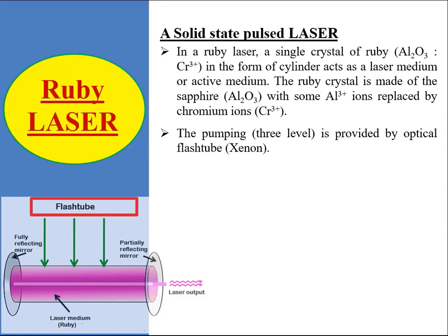By doping, aluminum in Al2O3 is replaced by chromium ions. For a good lasing action, the doping is approximately of the order of 0.05 weight percent. By this, the crystal of Al2O3 appears pink and as a whole is known as ruby crystal, which acts as the active material for the ruby laser. The stimulated emission of photons is provided by chromium ions. Ruby laser works on a three-level pumping scheme.